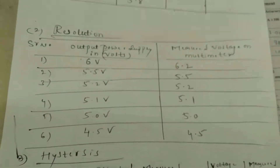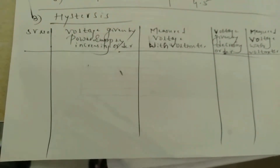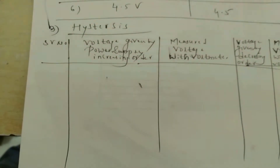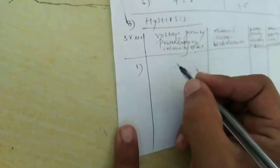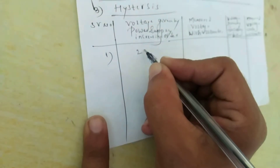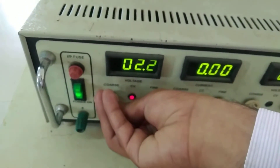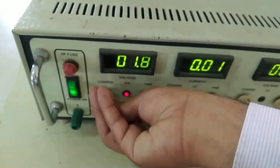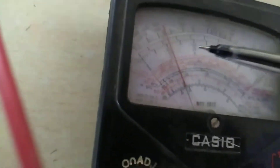Next, we will move on to hysteresis. For hysteresis, you have to increase and decrease. First value: provide 2 volts using the power supply. The multimeter will respond exactly on 2 volts.